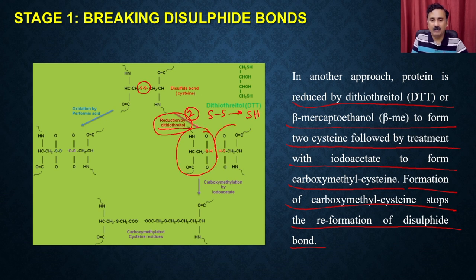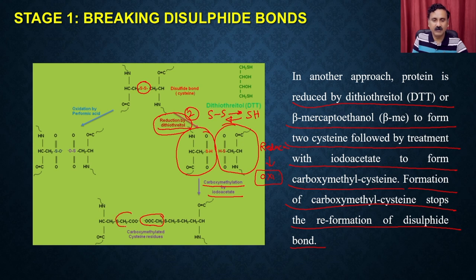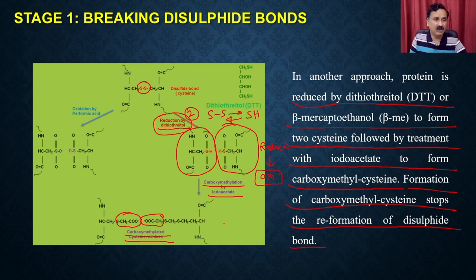The problem with DTT reduction is that in a reducing environment the bond remains as S-H, but once it acquires an oxidizing environment, the S-H is converted back into S-S. To avoid that, you react it again with carboxymethylane via iodoacetate, so the sulfur is tagged with a functional group and forms carboxymethylated cysteine residue. Once this is done, they will not come back together even under oxidizing conditions. Then you can proceed to stage 2.